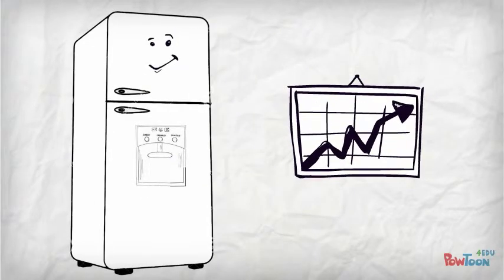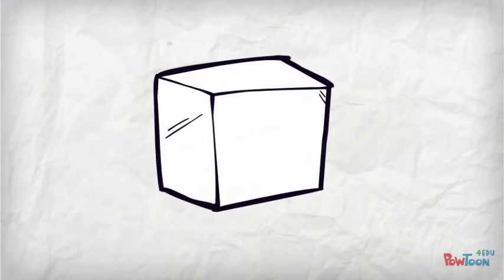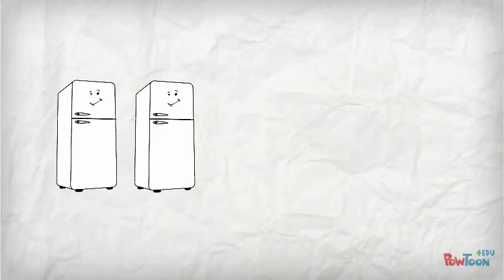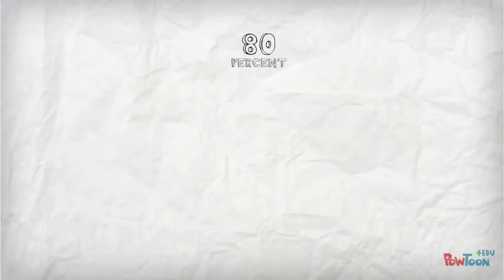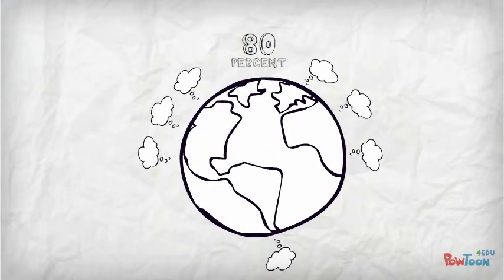Automatic ice makers and door dispensers consume more energy than refrigerators without these features. The most energy-efficient refrigerator models measure 16 to 20 cubic feet. It is less costly to run a large refrigerator than two smaller ones. 80% of refrigerator environmental impact occurs in the form of electricity consumption and CO2 emissions.